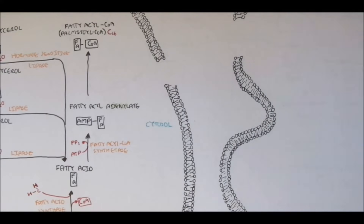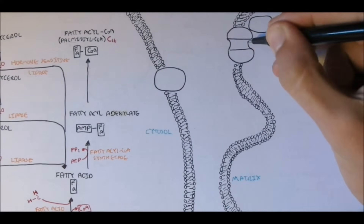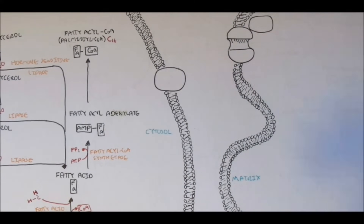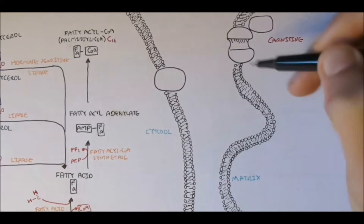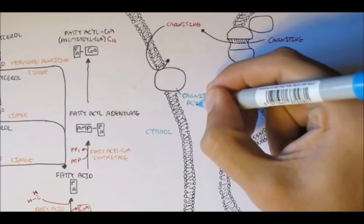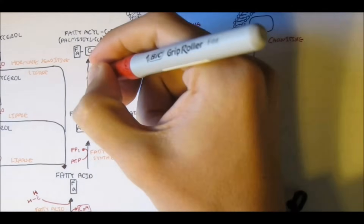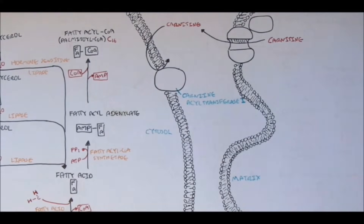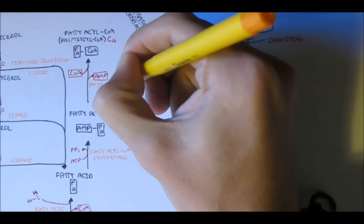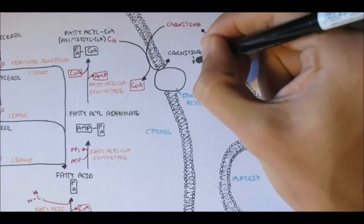The fatty acyl CoA can be any number of hydrocarbons, but typically for fatty acid breakdown we would want to degrade the big ones, such as palmitoyl CoA, which is a 16-carbon fatty acid chain. There is a molecule in the matrix called carnitine, which serves as a carrier for fatty acids across the inner mitochondrial membrane through a transporter. Carnitine acyl transferase I, located on the outer membrane, transfers the fatty acyl group — palmitate in this case — from palmitoyl CoA to the hydroxyl group of carnitine.